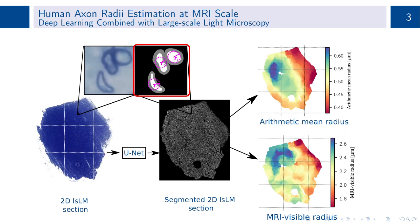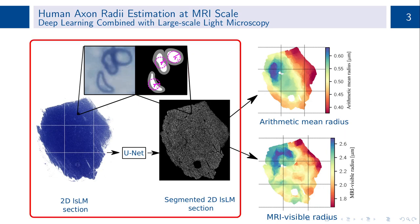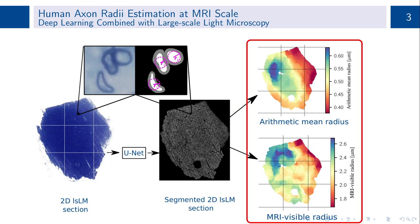Axon radii were estimated on large-scale light microscopy sections using a UNET-based axon instance segmentation pipeline. We assessed the potential of this pipeline to spatially map two kinds of ensemble mean axon radii across whole sections.